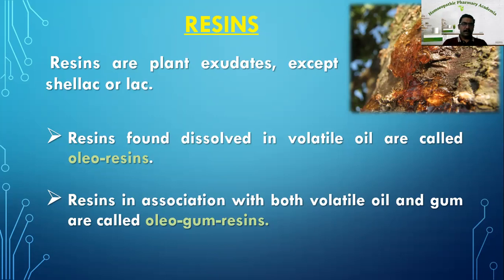When resin is dissolved in volatile oils, it is called an oleoresin. Oleoresins can be seen in capsicum, cardamom, cinnamon, clove, fenugreek, ginger, parsley, black or white pepper, etc., because these spices contain oleoresins — that is, resins dissolved in volatile oils.